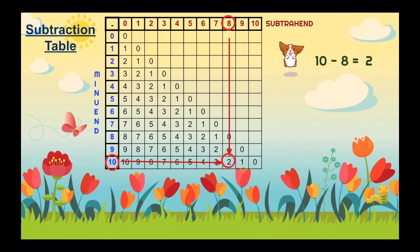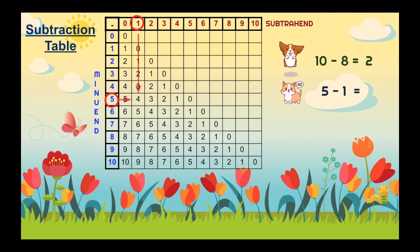Let's have another example: 5 minus 1. Again, let's look for 5 and 1 — remember to look for them in the right place. Then draw the lines. It would give us 4. So, 5 minus 1 is equal to 4.